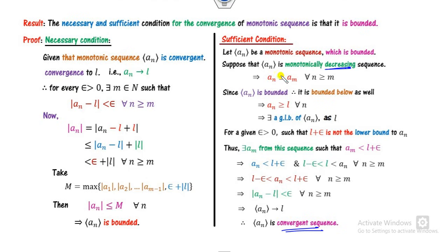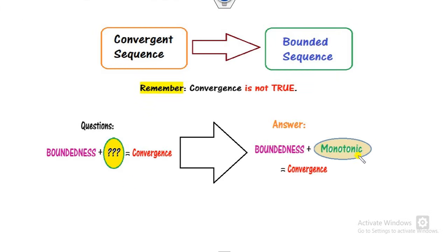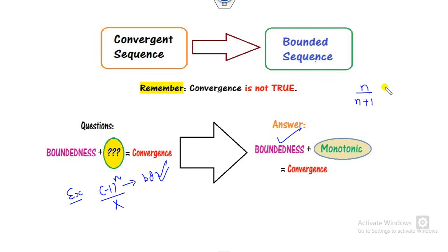If you consider an increasing sequence instead, then the inequality signs are reversed — instead of L plus epsilon you consider L minus epsilon and so on. The proof is quite similar, so there is no need to consider both proofs separately. Therefore, the necessary and sufficient condition for a sequence to be convergent is that it should be both bounded and monotonic. For example, the sequence (-1)^n is bounded but not monotonic, so it is not convergent. But the sequence n/(n+1) is bounded and also monotonic, so it is a convergent sequence.